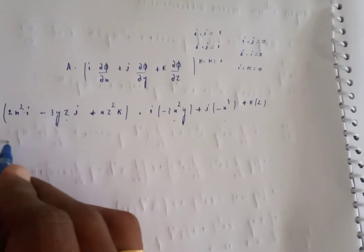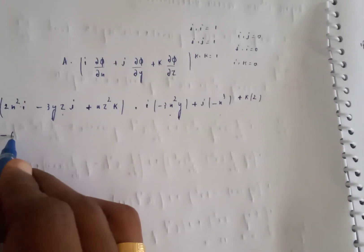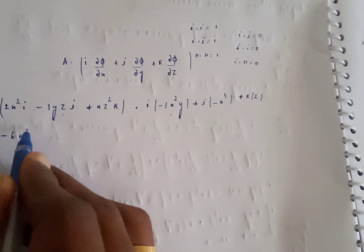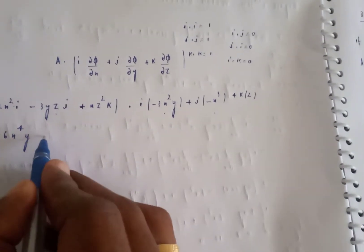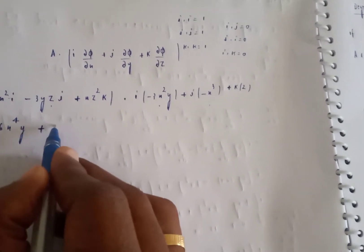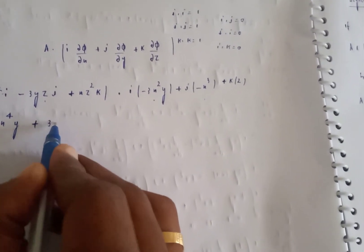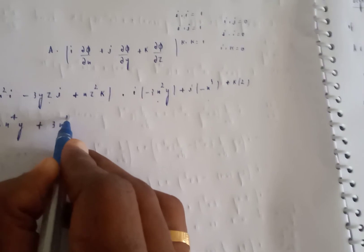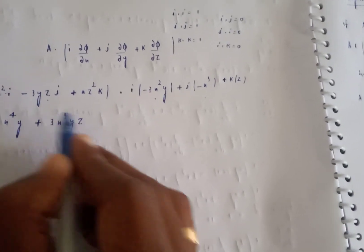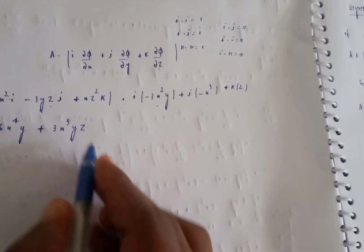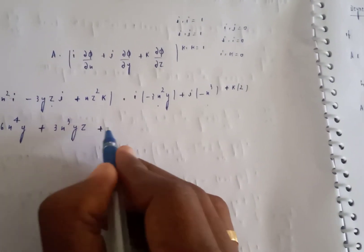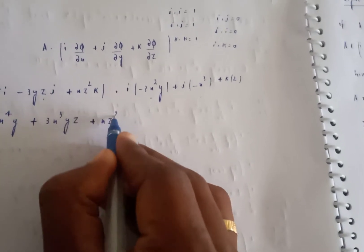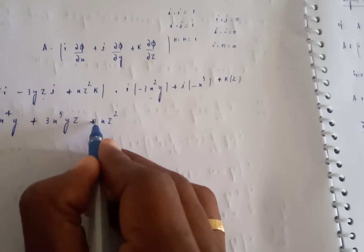Computing the dot product terms: 2x² times (minus 3x²y) gives minus 6x⁴y. Then minus 3yz times (minus x³) gives plus 3x³yz. Then xz² times 2 gives 2xz². Combining: minus 6x⁴y plus 3x³yz plus 2xz².